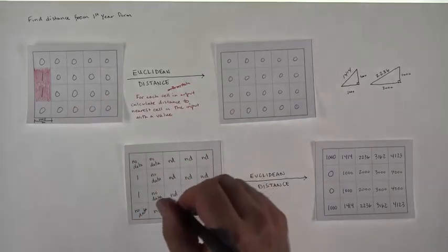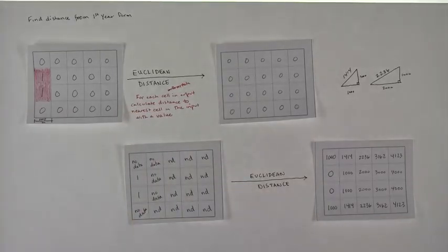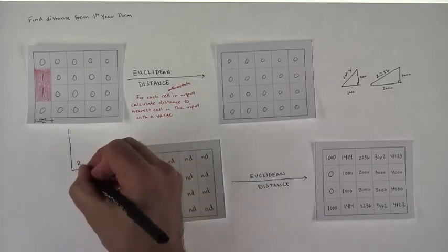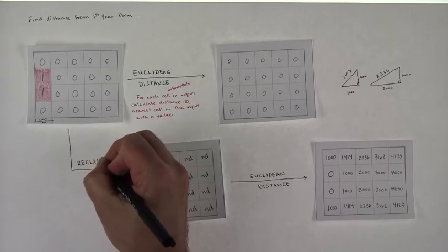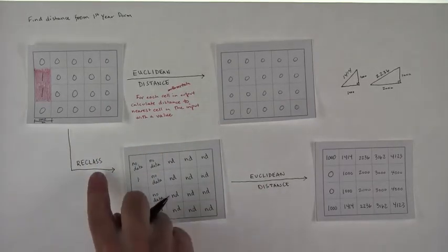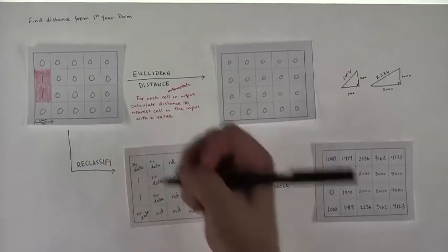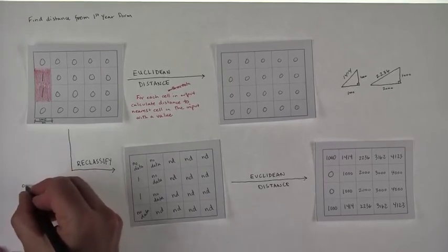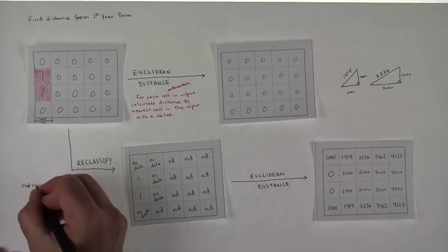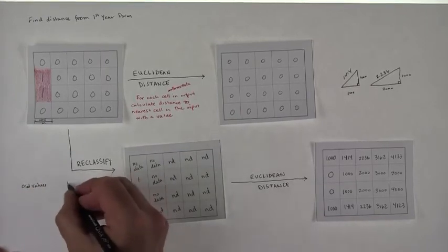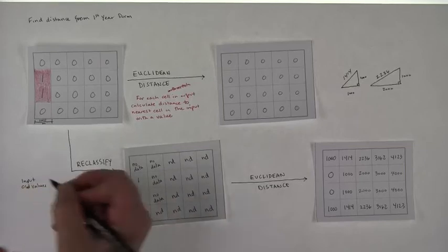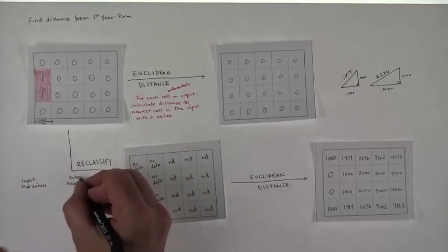So then how do you go from here to here? Well, we're going to use a tool called reclass. Actually, I think in Arc, it's called reclassify. And what reclassify does is it allows you to set up a table where the table is going to say something like old values, I think. And then you want to create new values. And maybe another way is to say that these are the input values and these are the output values.